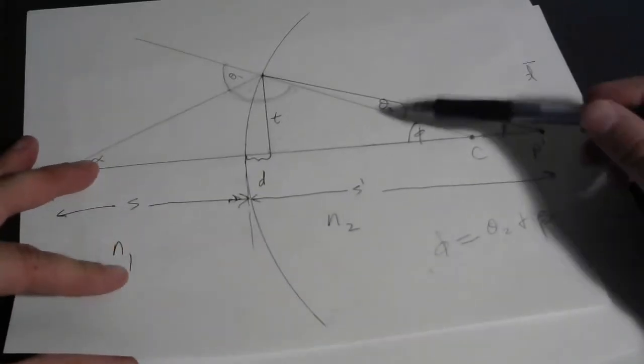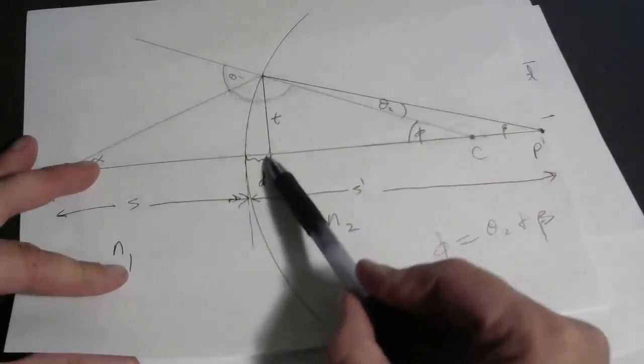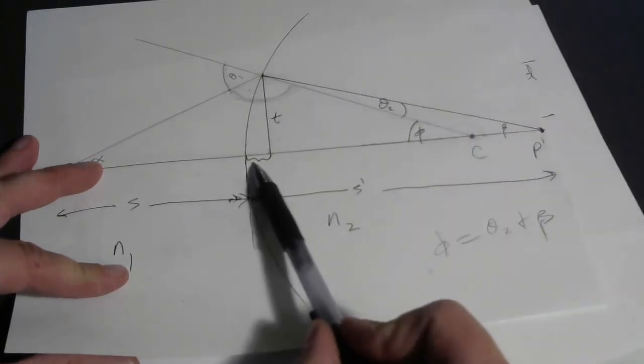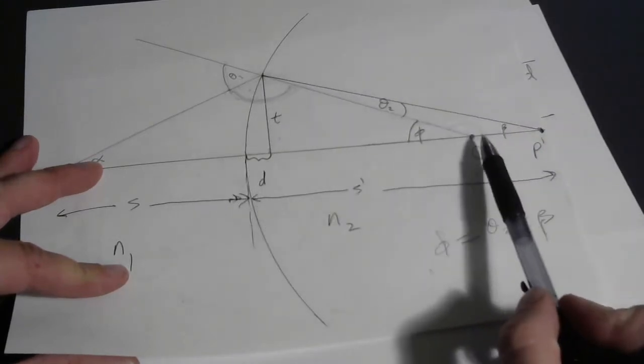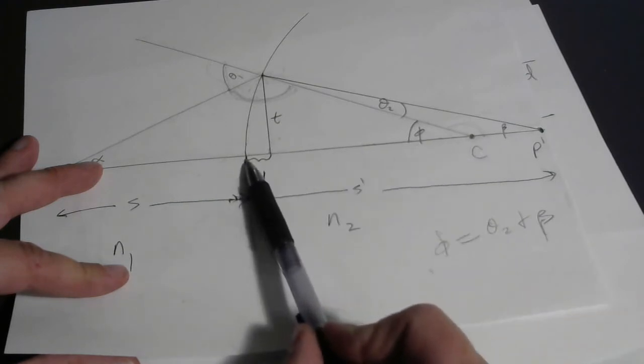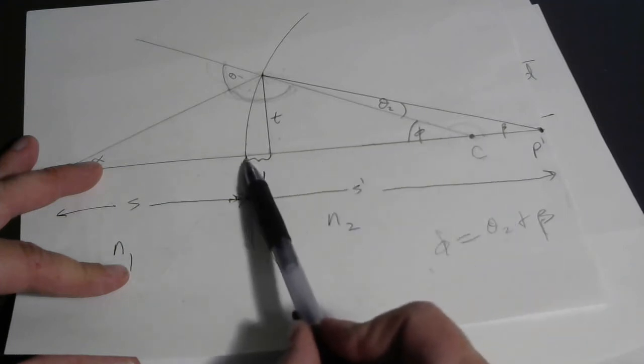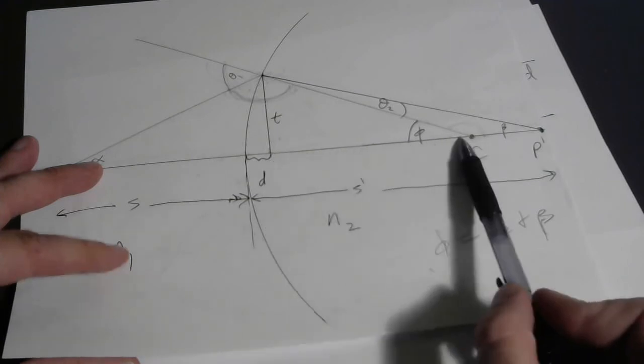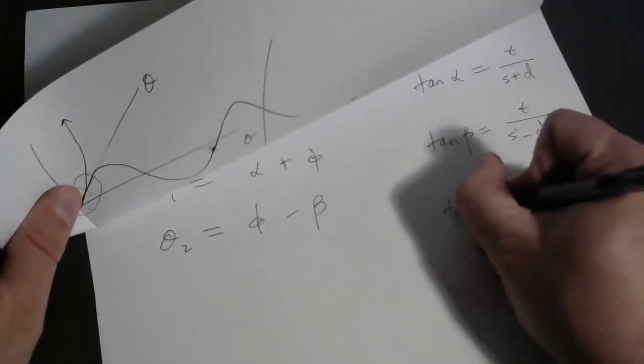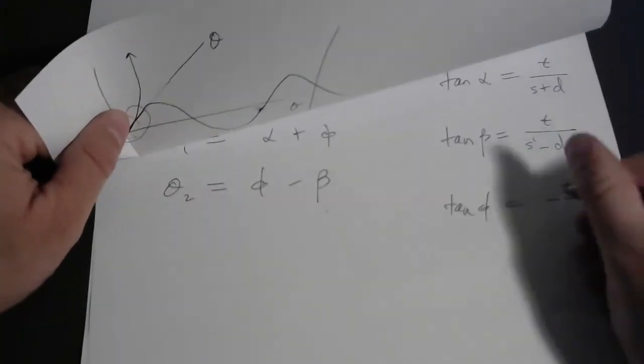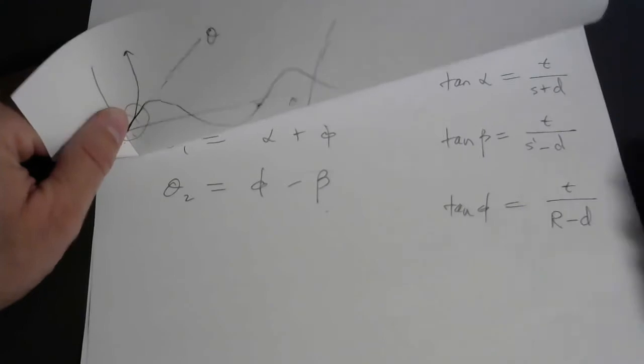The last angle we're going to need is phi. Let's look at this smaller right triangle. Tangent of phi would be this opposite side over. Okay, what do we do now? Well, what's the distance from the center of curvature to the front here? That's just the radius of the circle. So if we take the radius of the circle and subtract off this little quantity d, we will have the adjacent side of this right triangle. Tangent of phi should be t over r minus d.